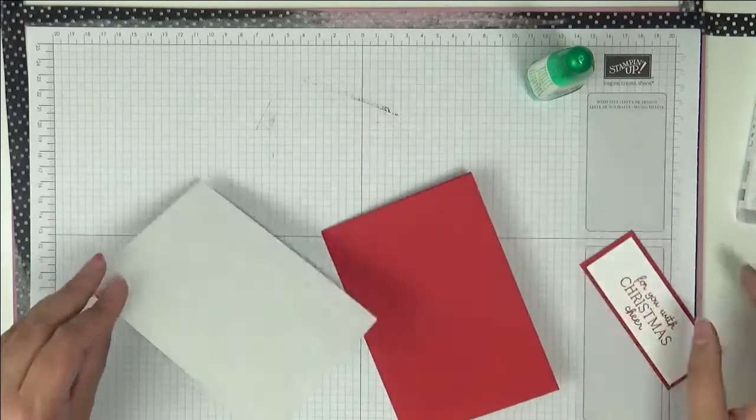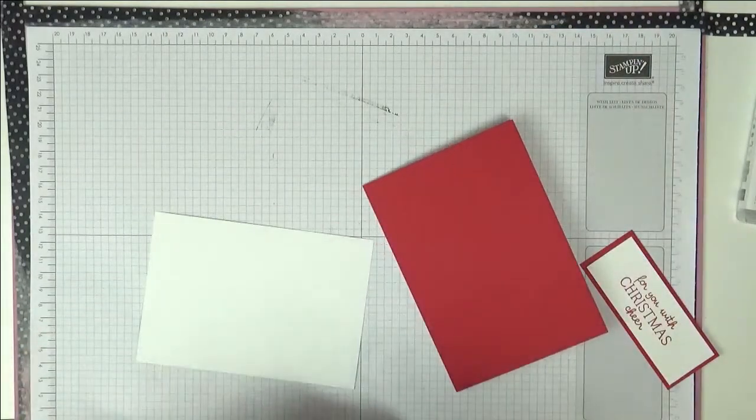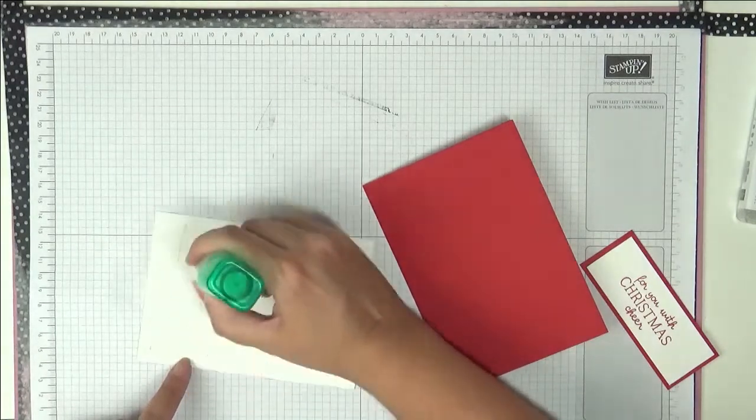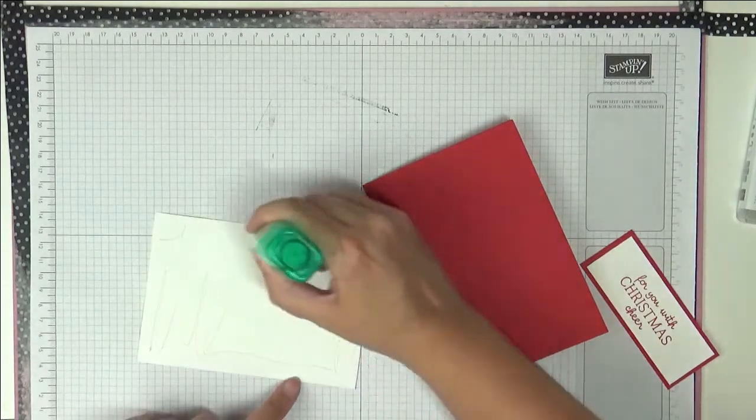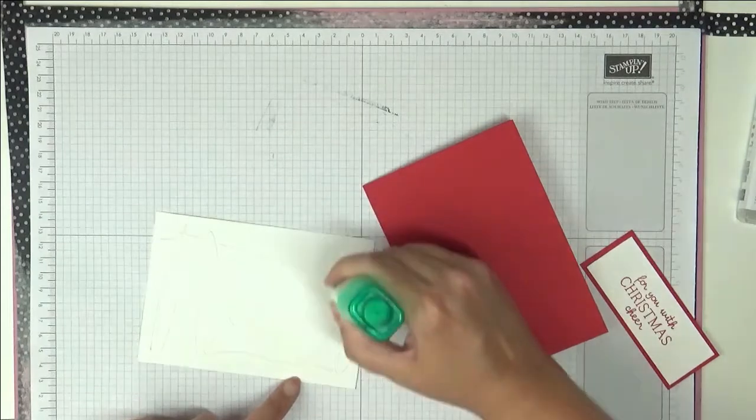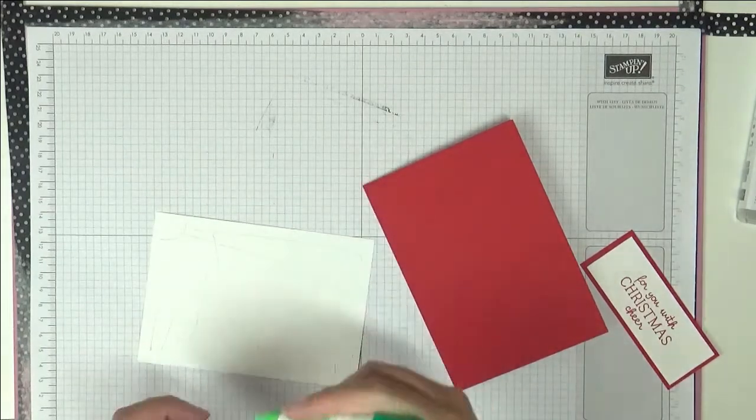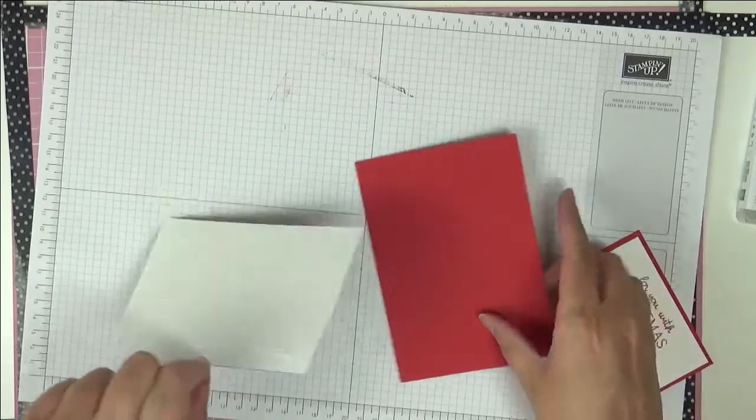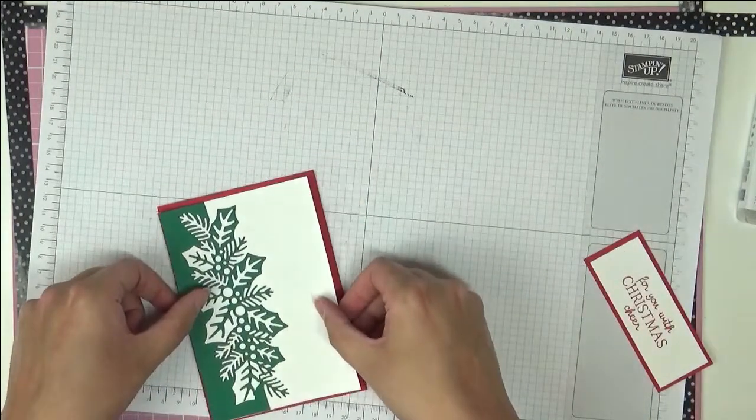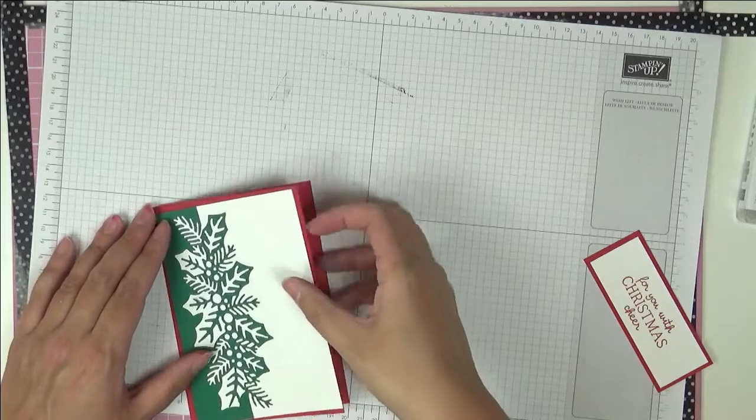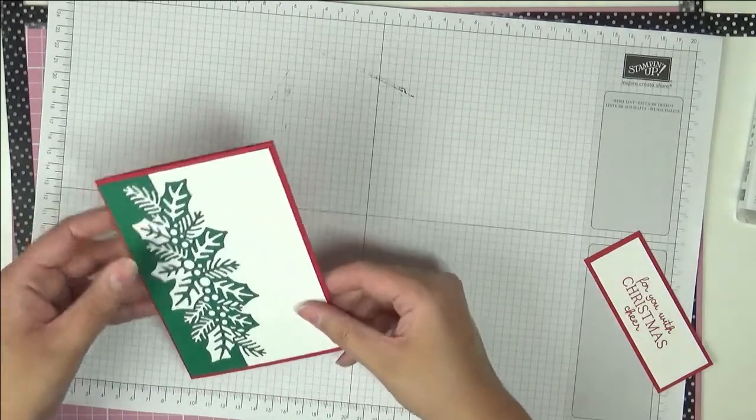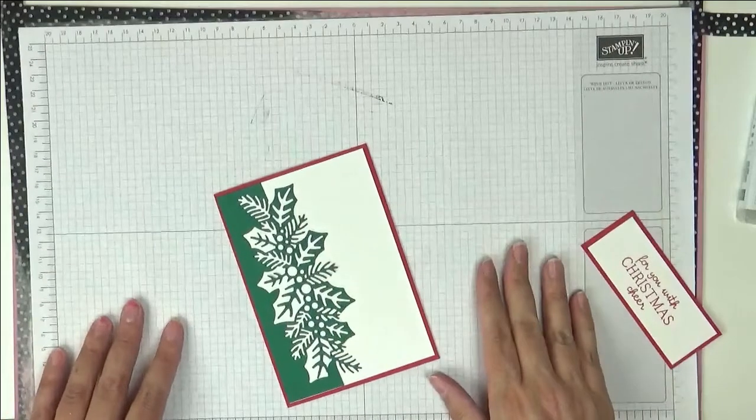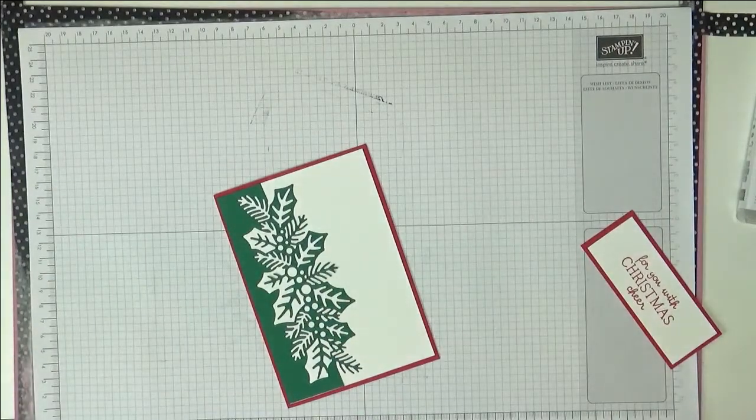Bring back our card base. Our card base is Real Red. This is a standard A6 card base. That's an A4 sheet cut in half and then folded in half. I love this. I always love red and green together. I think they just look so pretty.